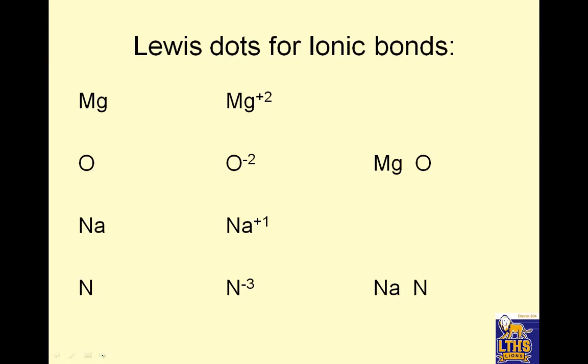Magnesium on the periodic table is right here. It has two valence electrons. Mg+2 loses two dots, all it is is +2. Oxygen has six valence electrons - one, two, three, four, five, six. O-2 would have eight. Sodium has one valence electron. Na+1 has nothing.